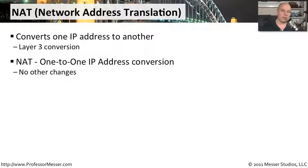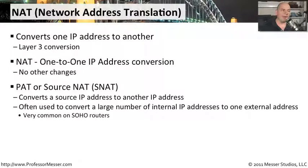There is also a situation where we might want to convert many different IP addresses to a single address. That is something we often call PAT, which may also be referred to as Source NAT. This is where we take perhaps a large number of devices, and any of those devices communicating out to the internet will have their source address changed to look like it's coming from one single IP address. This is very commonly done with a home router, where all your internal private IP addresses get translated through your local router to one single public IP address from your ISP.